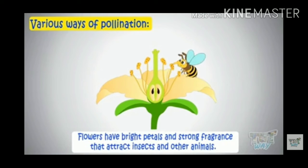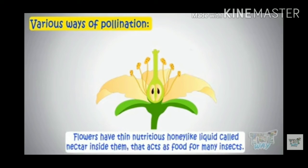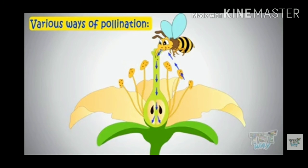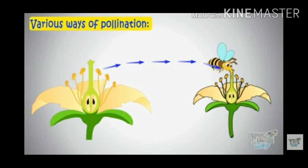Students, there are various ways by which pollination occurs. Flowers have bright, nutritious, honey-like liquid called nectar inside them, which acts as food for many insects. These insects are attracted towards the colorful petals. So there are many ways by which pollination occurs. First is through insects — insects are attracted towards the petals and this process of pollination occurs.